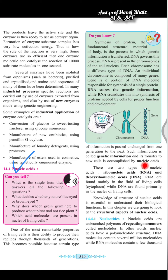Nucleic acid transmits genetic information from one generation to another generation, which is not changed. There are two types of nucleic acid: one is RNA, that is ribonucleic acid, and another is deoxyribonucleic acid. In short, RNA and DNA are the two very well-known nucleic acids which are present.